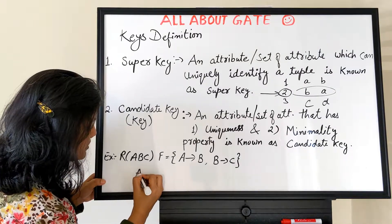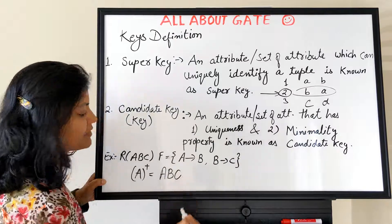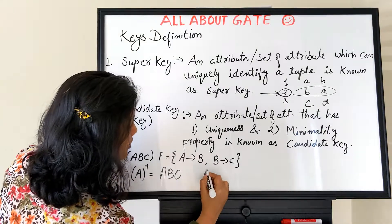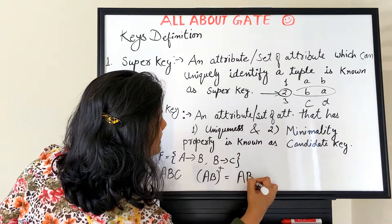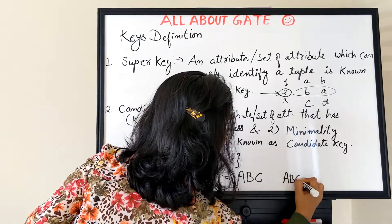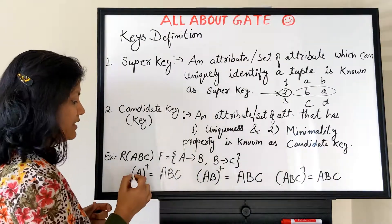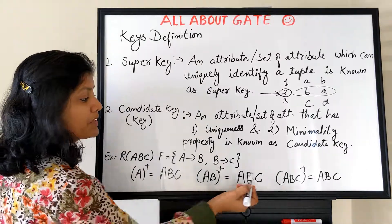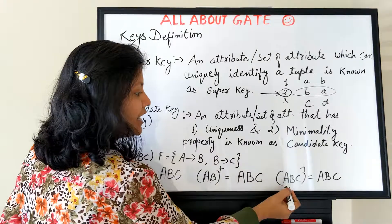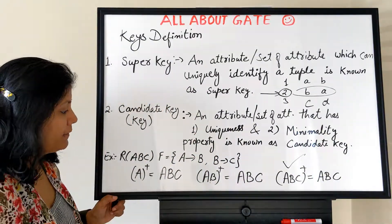Take relation R with attributes A, B, C and functional dependencies A→B and B→C. Finding A+: A determines B, and B determines C by transitivity, so A+ = {A, B, C} — the entire relation. Finding AB+: AB determines itself and B determines C, so AB+ = {A, B, C}. Finding ABC+: it trivially determines itself, so ABC+ = {A, B, C}. All three determine the entire relation, making them all super keys.